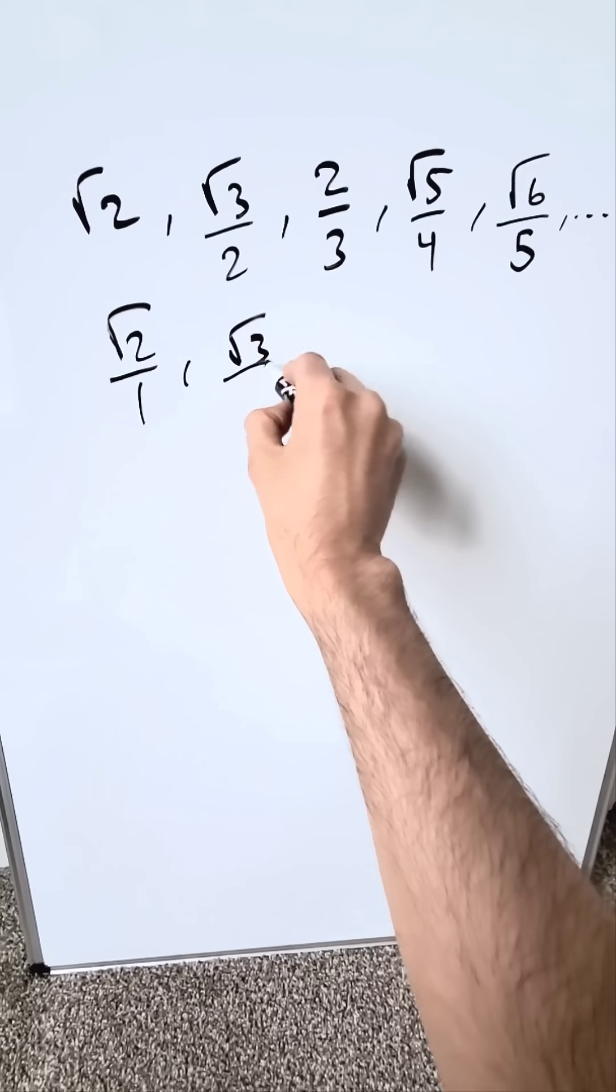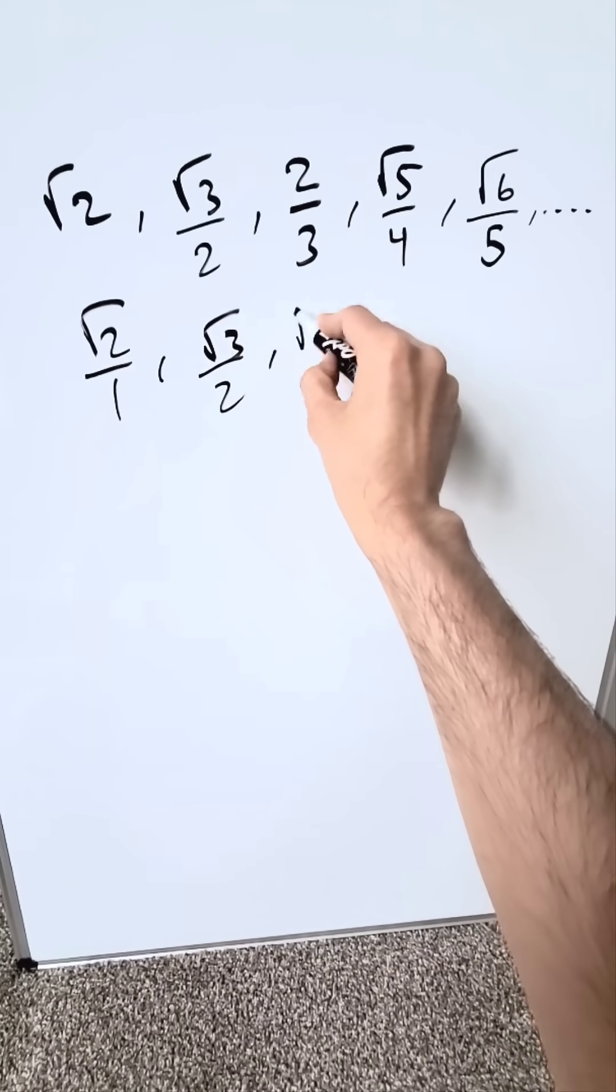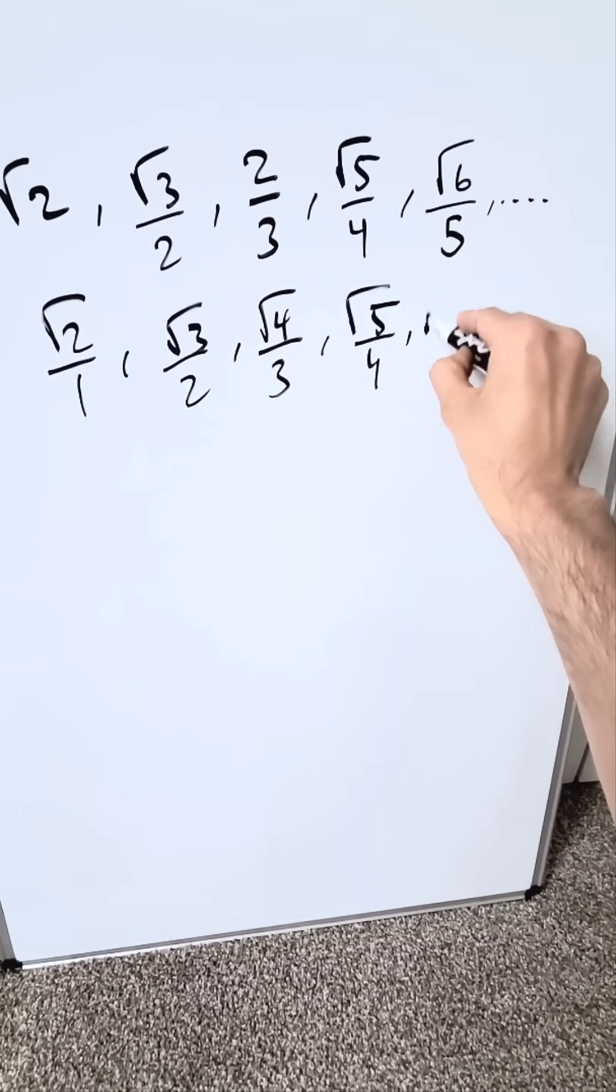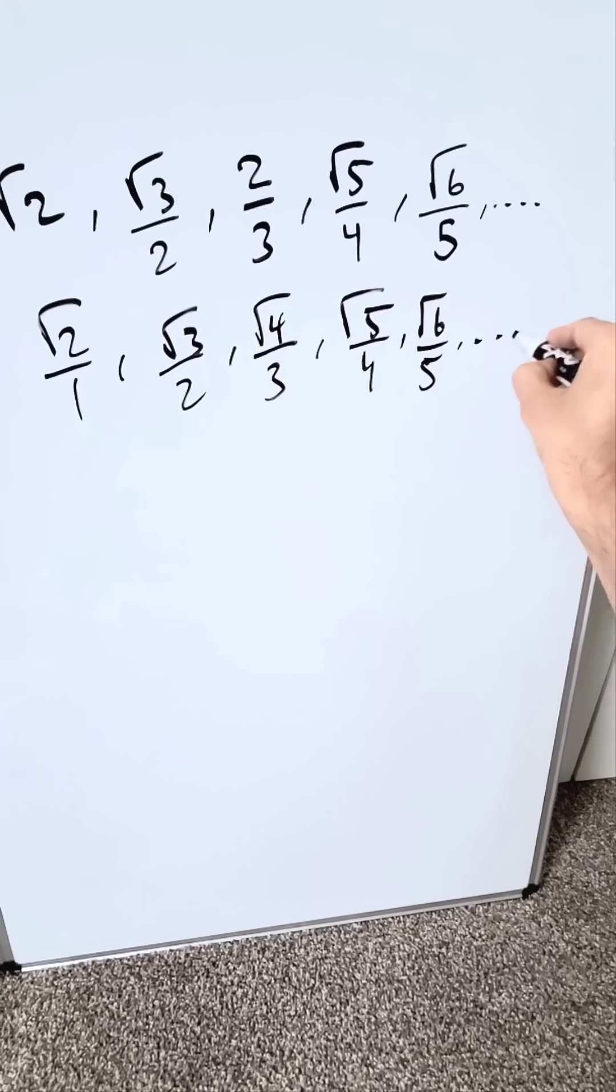Root 2 over 1, then I have root 3 over 2. This 2 over 3 is really root 4 over 3, hence we see a 2 in the numerator. Root 5 over 4 and root 6 over 5, on and on.